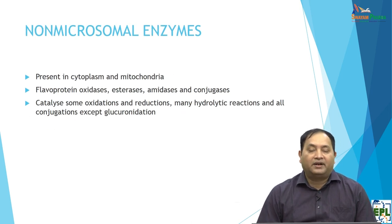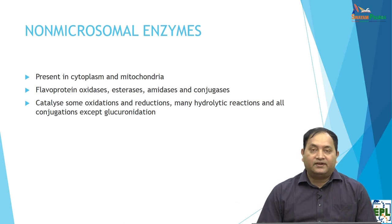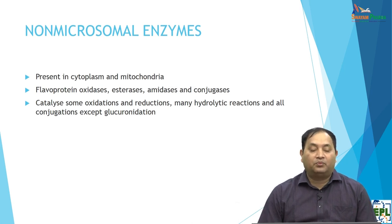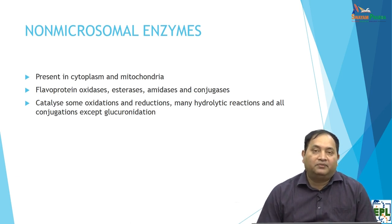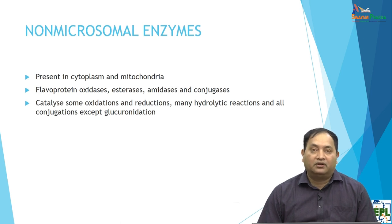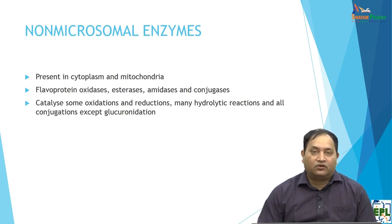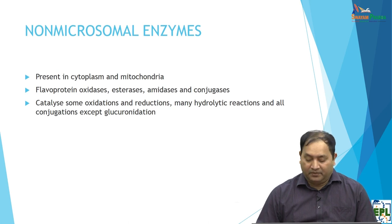Another category is non-microsomal enzymes. These are present in the cytoplasm or mitochondria, and include flavoprotein oxidases, esterases, and amidases. In Phase 2, these catalyze some oxidation and reduction, and many hydrolytic reactions take place through conjugation, except glucuronidation. So we have microsomal and non-microsomal enzyme systems.